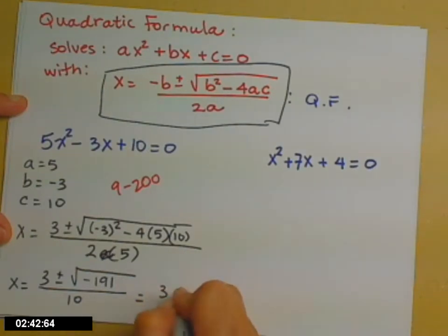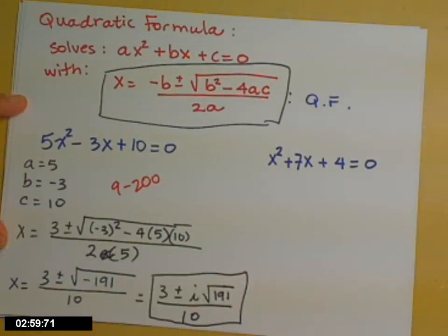And then, since we've talked about imaginary numbers, we'll go ahead and take that negative under the radical out. So I'll have an i in front. 191, I'm not willing to look for perfect square factors. I'm going to get on with my life. So I'm going to leave it like that. Notice I have two answers: 3 plus i times the square root of 191 over 10, and 3 minus i times the square root of 191 all over 10.